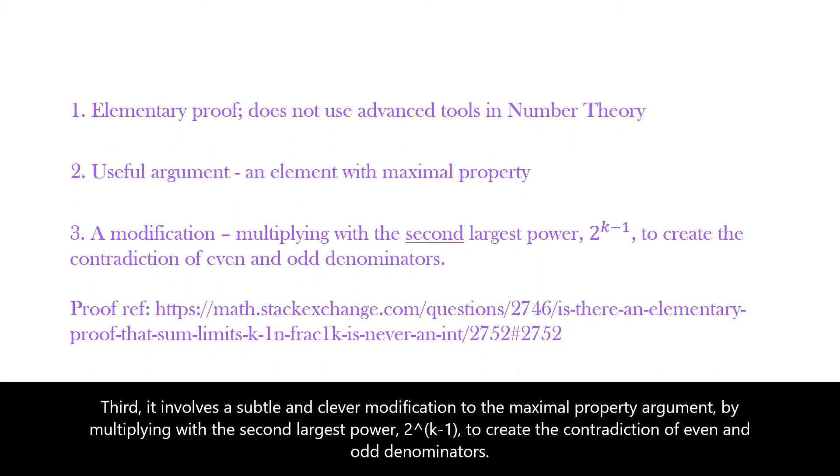Third, it involves a subtle and clever modification to the maximal property argument by multiplying with the second largest power 2 to the power of k minus 1 to create the contradiction of even and odd denominators.